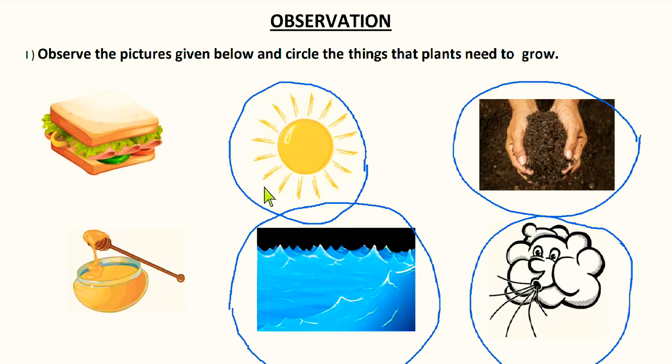Next: sun. Yes, plants need sunlight to prepare their own food. So plants need sunlight — we have to encircle it.